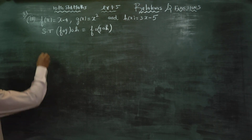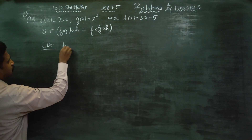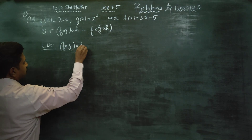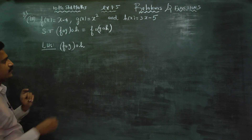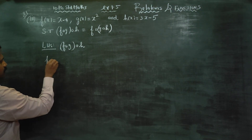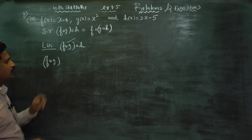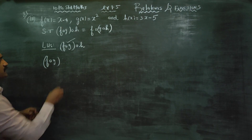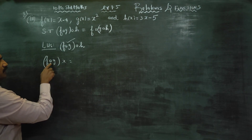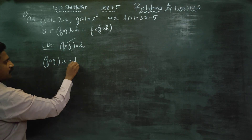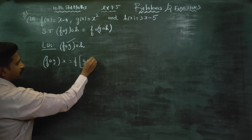First we will start with the LHS. LHS is f.g.h. First, let's complete the bracket. This connection is cut here — f connection is cut here, g with h, and x.